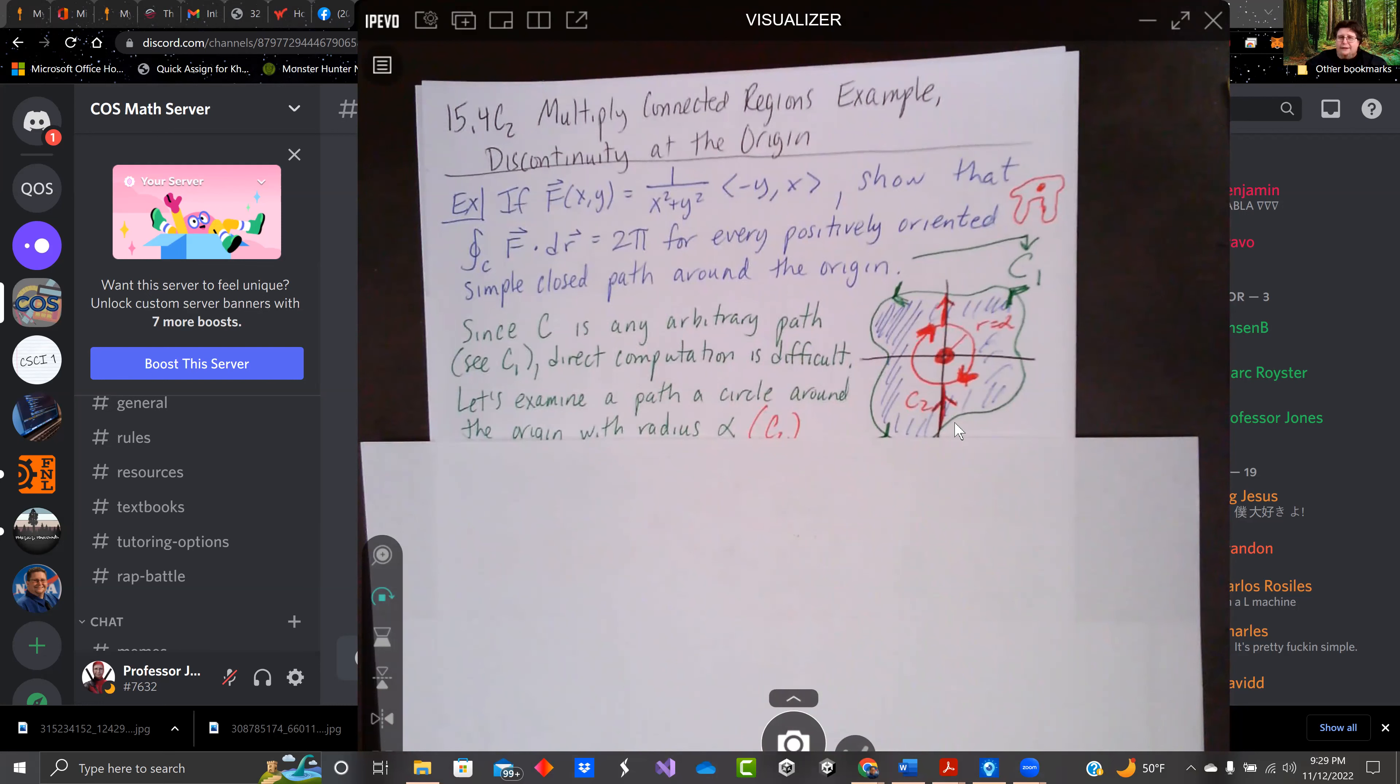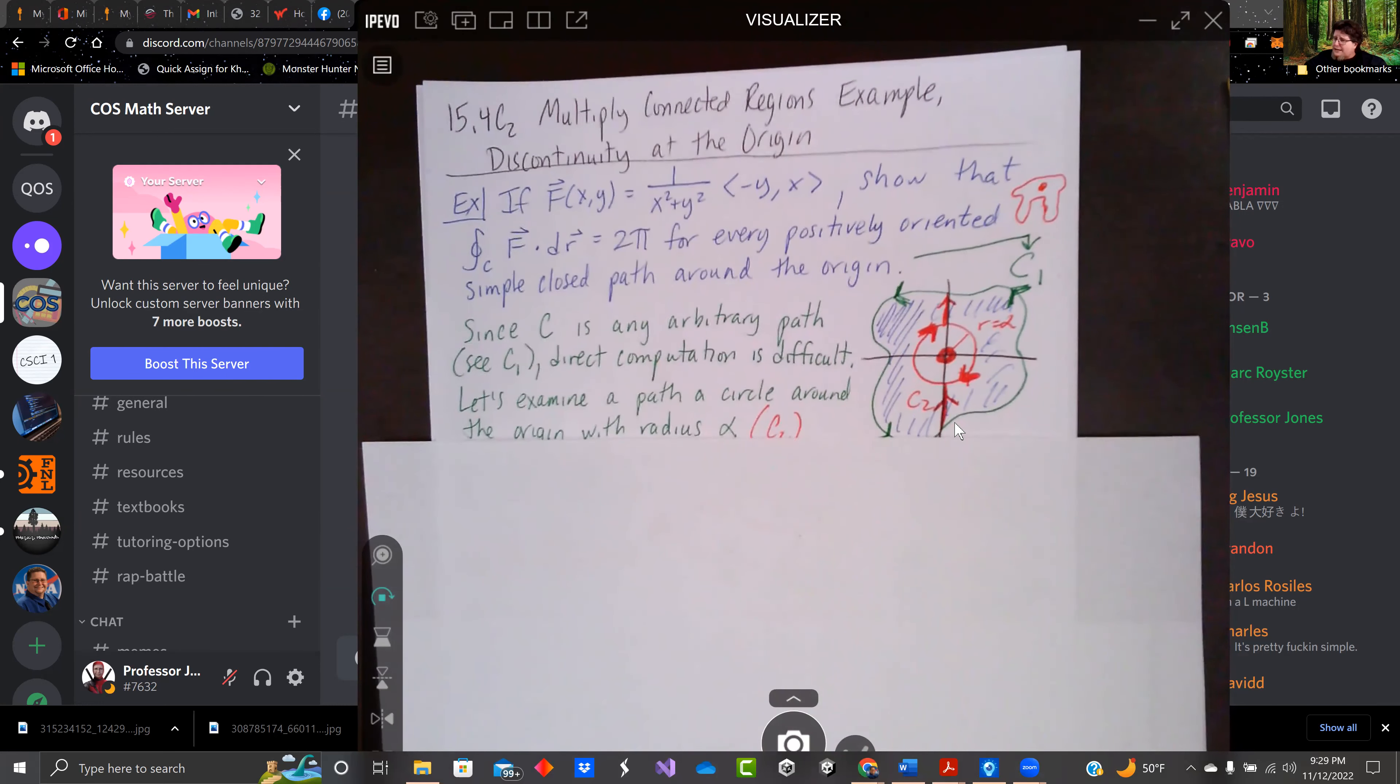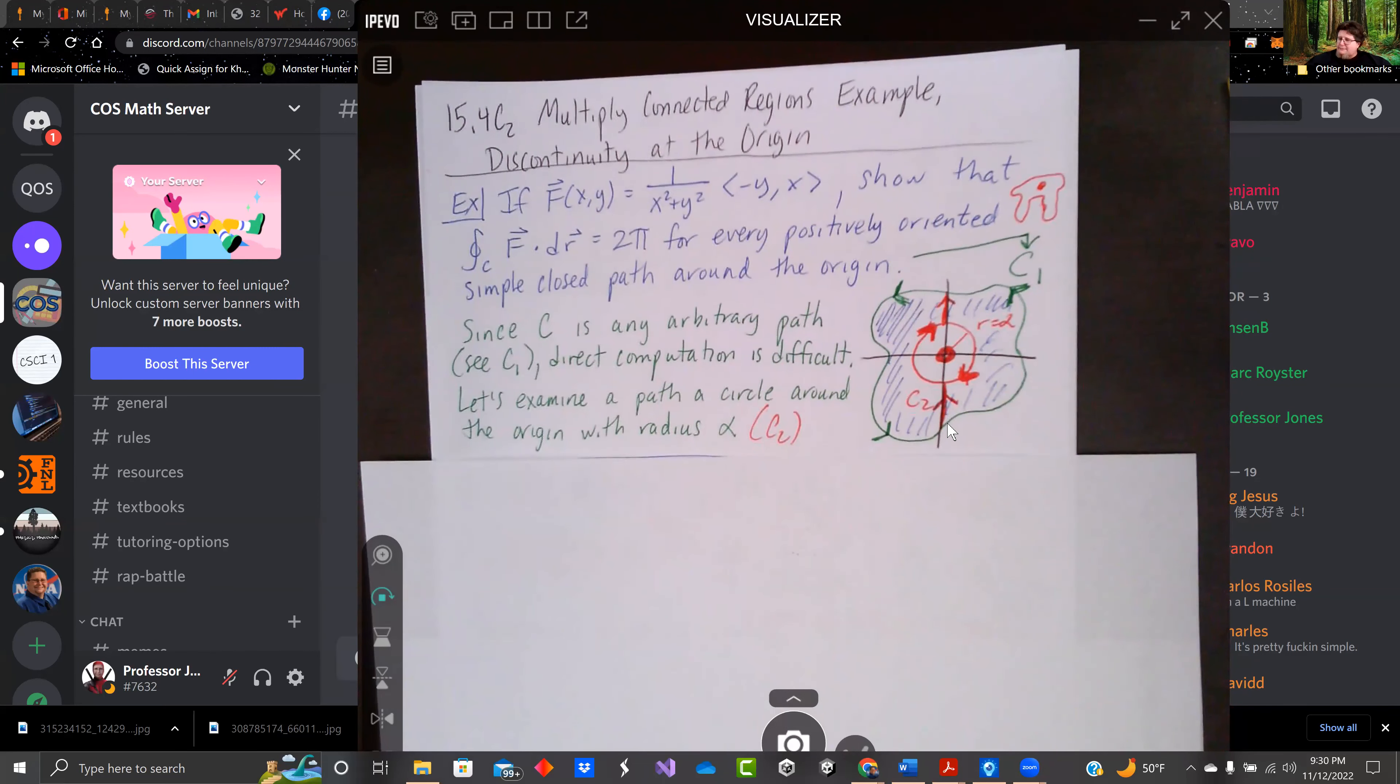C is an arbitrary path, though. And so direct computation is difficult. So let's examine a different path, a circle around the origin with radius alpha, which will be our c2. And we need it to go clockwise so that the region's on the left.